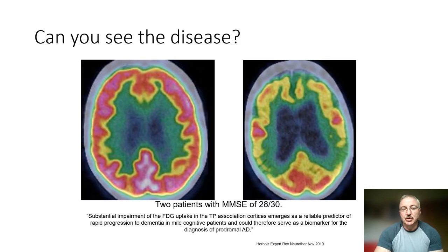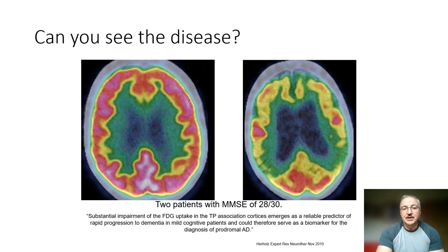Here we have two patients displayed on the rainbow scale, both with MMSEs of 28 out of 30. I want to introduce the idea that dementia is brain failure — and we can see which patient has brain failure. Using the rainbow scale for reporting can be difficult, so we set the intensity as discussed in previous lectures and then do not adjust it again. This helps maintain consistency.